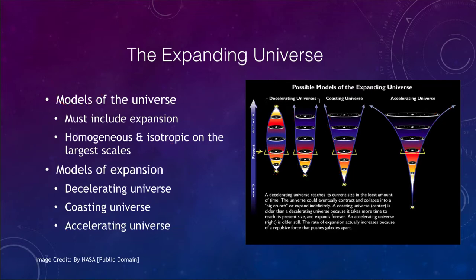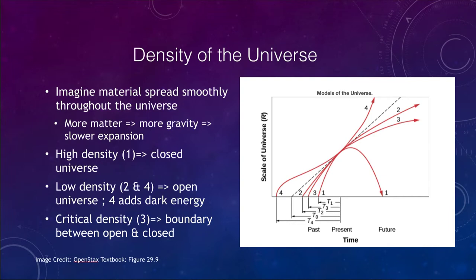One of the other things that we look at is the density of the universe. If we imagine that all the material in the universe is spread out uniformly, which it isn't, but it gives us a way of determining the density. The more matter we get, the more gravity there's going to be, and the slower the expansion.